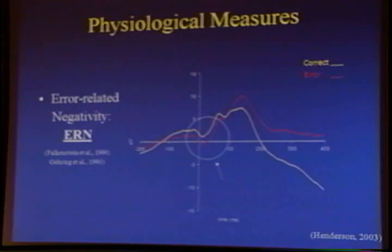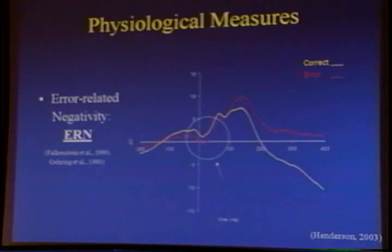This is actually from a group of seven to eight-year-olds that Heather Henderson, who was at that time a graduate student of mine, did, just to see whether or not one can identify an ERN or error-related negativity in children. And she was able to. What you can see here is that there's a greater negative amplitude to the trial in which the subject made a mistake, as opposed to the trial in which the subject was correct.